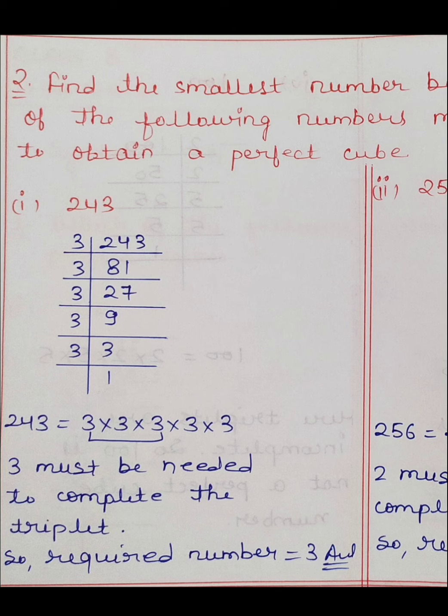Second is 256। 256 के prime factors: 2 आया 8 times। पहला triplet बन गया, दूसरा triplet बन गया। Third triplet में 2×2 है — एक और 2 की need है। 2 must be needed to complete the triplet, so required number is 2।